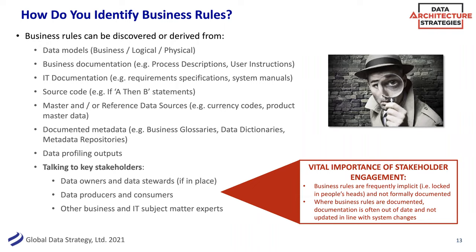The other thing is that where you do get documented rules, the documentation often gets out of date — changes are made to applications or systems that are not reflected in the documentation. So you cannot always take documentation at face value. It's really important to do that digging around. I'm going to hand back to Donna now, who's going to tell you a little bit about the value of data models as a really good starting point for deriving some core and key business rules.